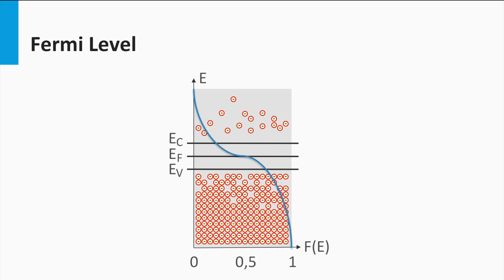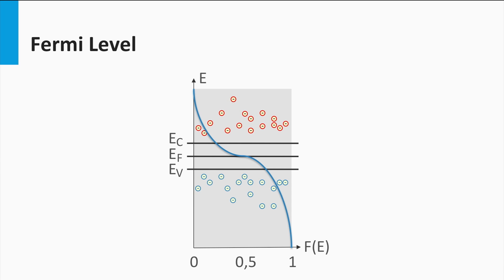Using the Fermi-Dirac function you can also tell something about the distribution of holes. The positions in the valence band at which electrons are missing are the locations at which holes are present, indicated by the blue dots. So if we remove the fixed electrons in the valence band we are left with only the mobile charge carriers — the free electrons and the free holes. One minus the Fermi-Dirac function shows for a semiconductor the probability that you will find a hole at a certain energy level.